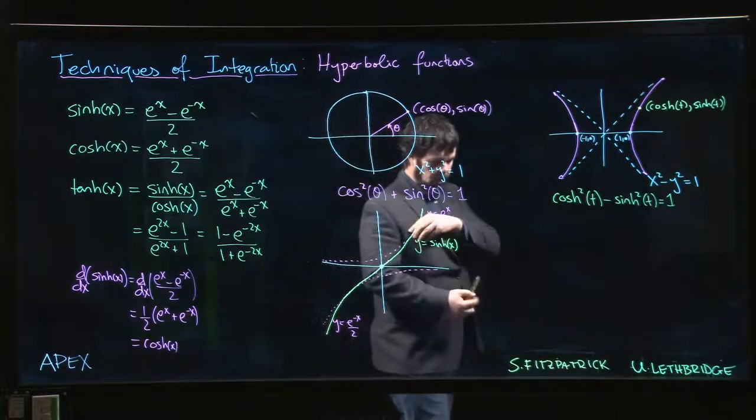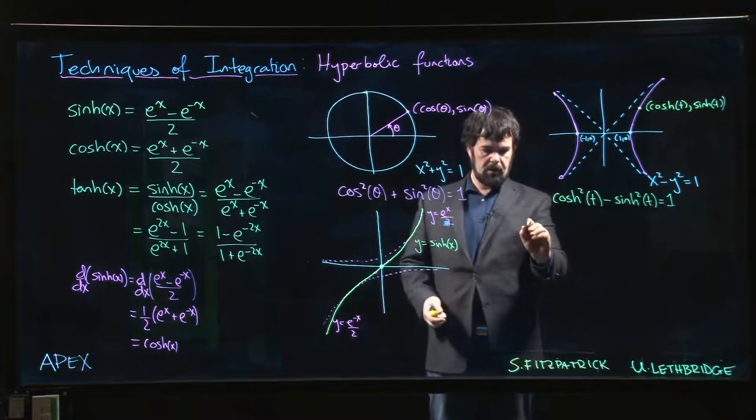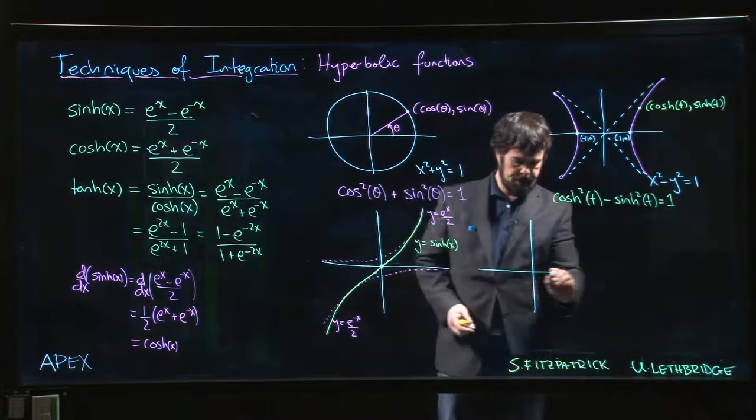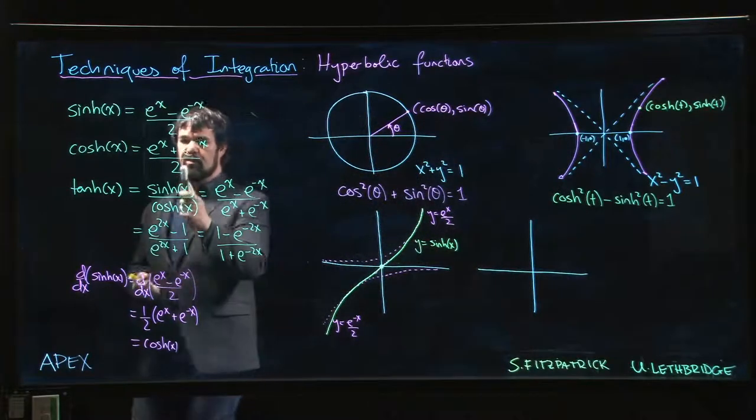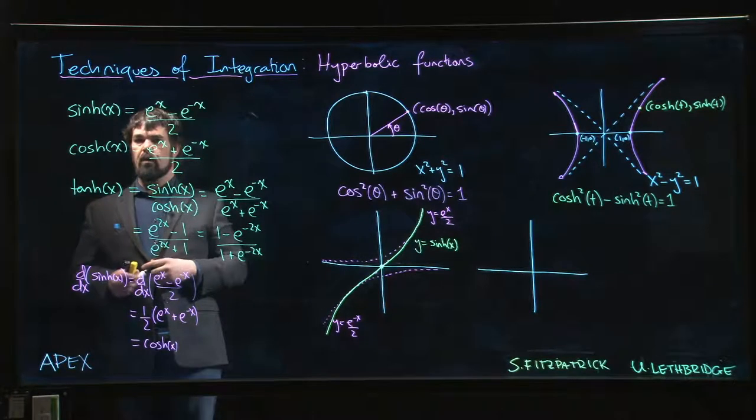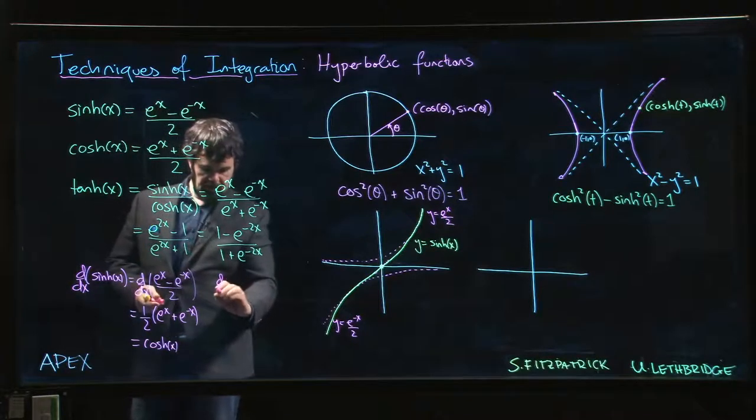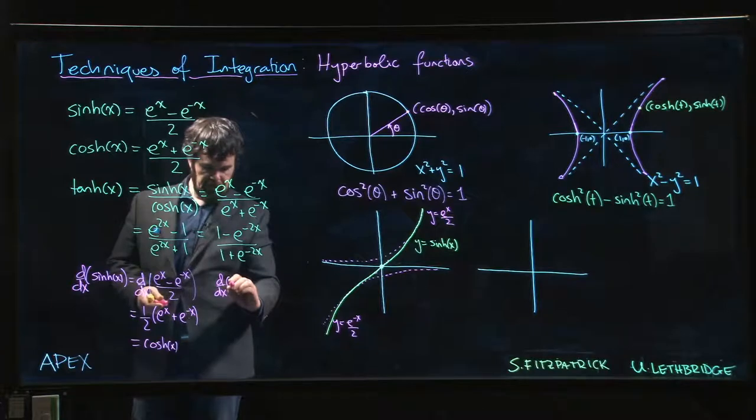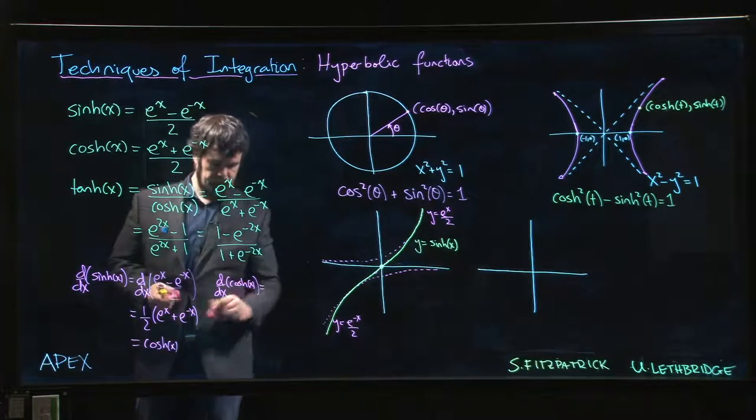Okay, for hyperbolic cosine, it's a fairly similar story, although one thing you might notice about this is that it's never negative. In fact, it's never zero. The minimum value for this - well, the minimum value is going to happen when the derivative is zero. Okay, what's the derivative for hyperbolic cosine? Might as well find that out while we're at it.